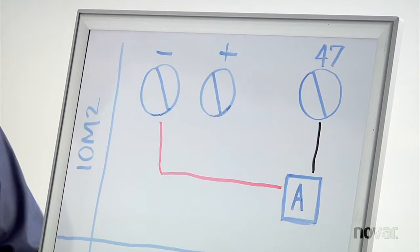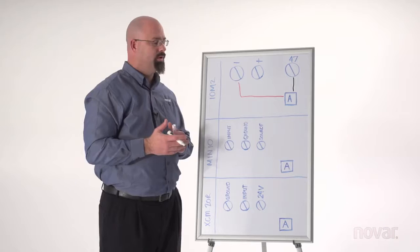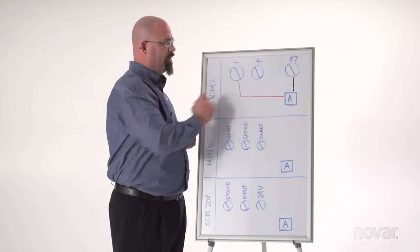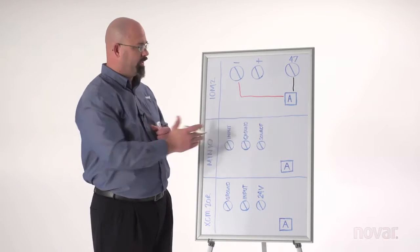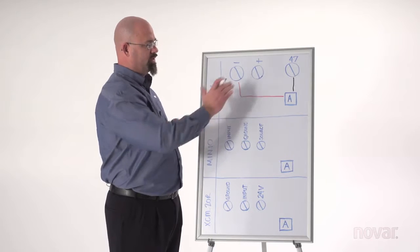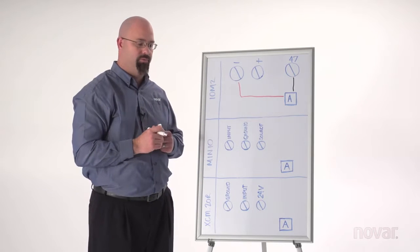Now right next to it, terminal 48 is also the earth ground. And 47 is the common terminal for all the sensors that are remotely powered in this case. I like to keep them separate. 47 for all the sensors, 48 for the ground of the IOM-2 itself.